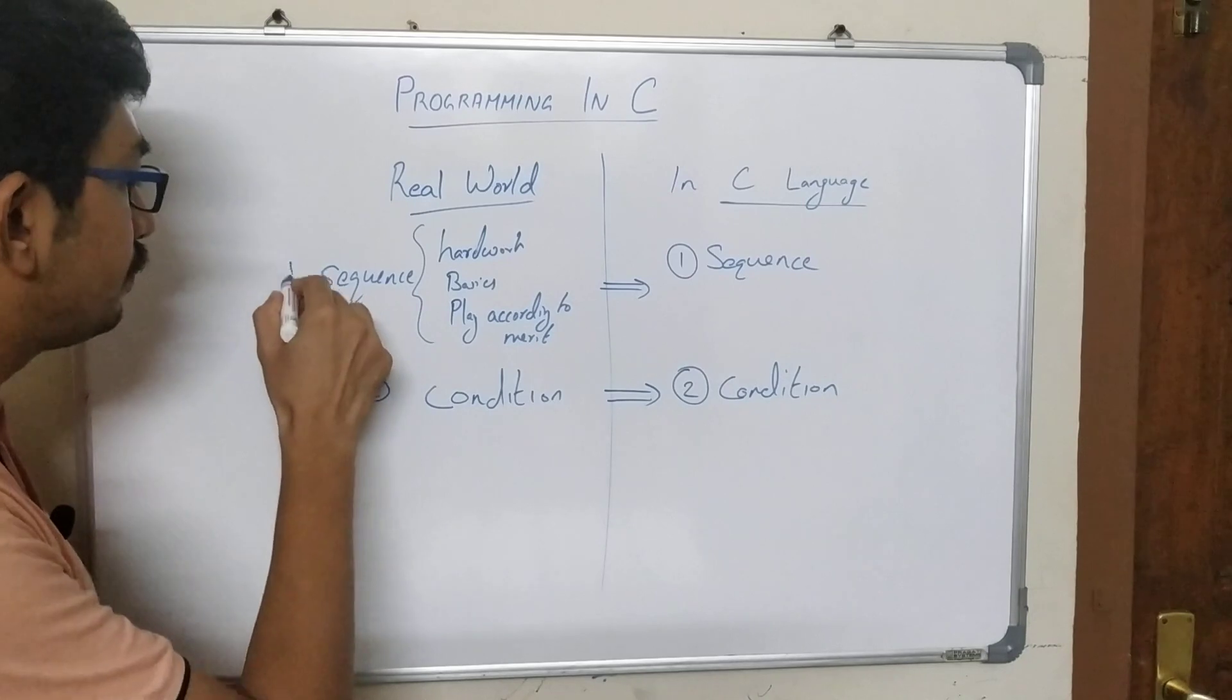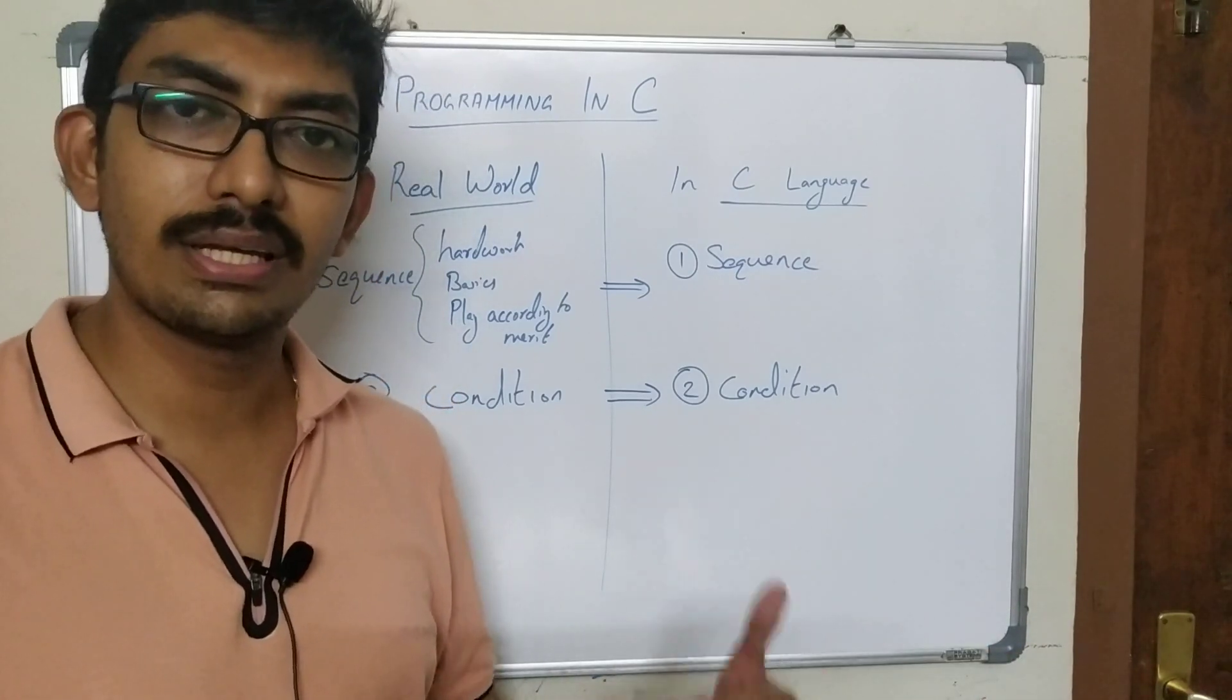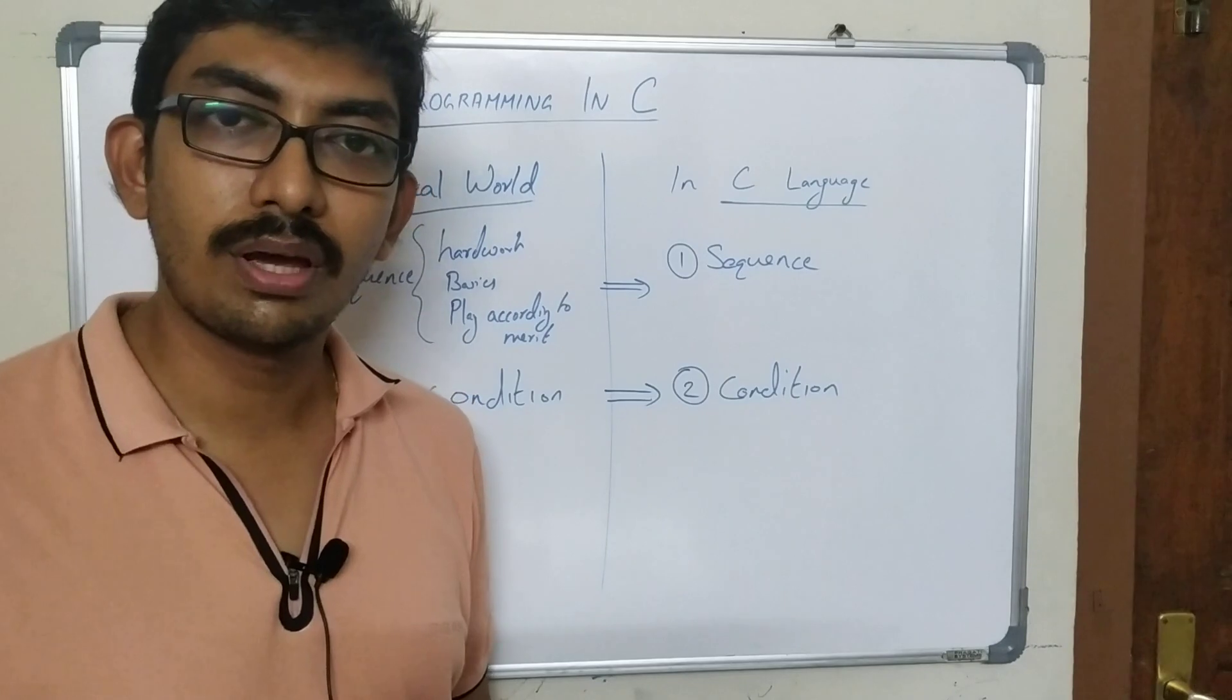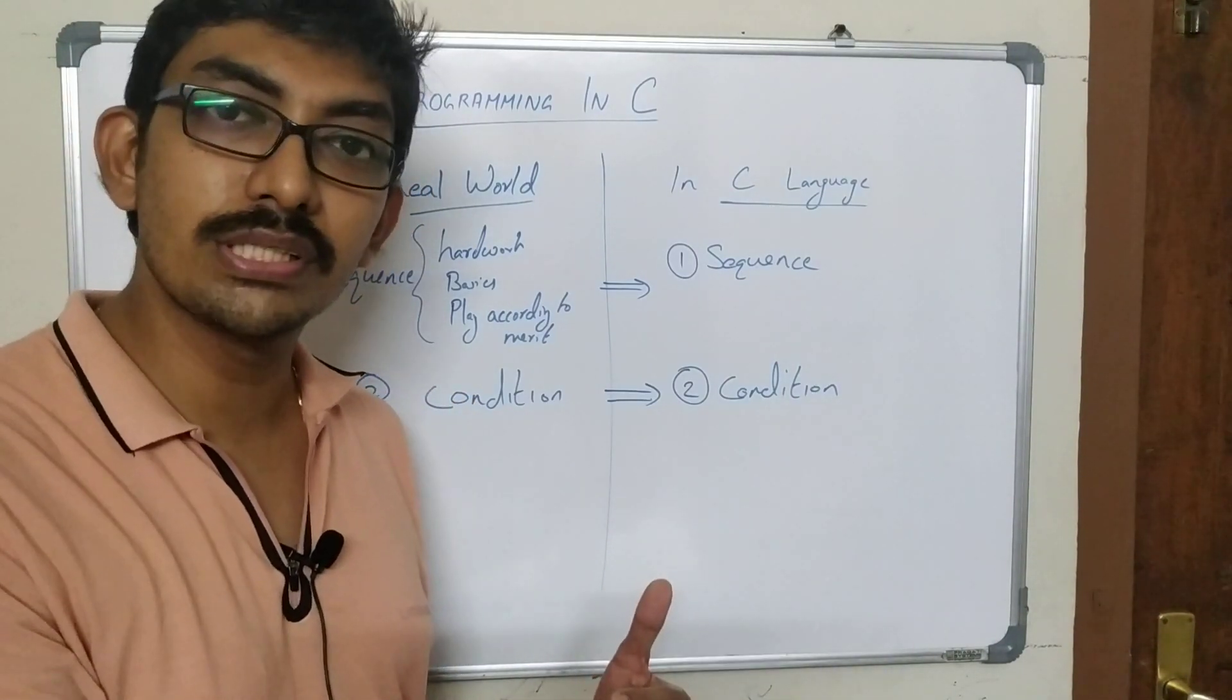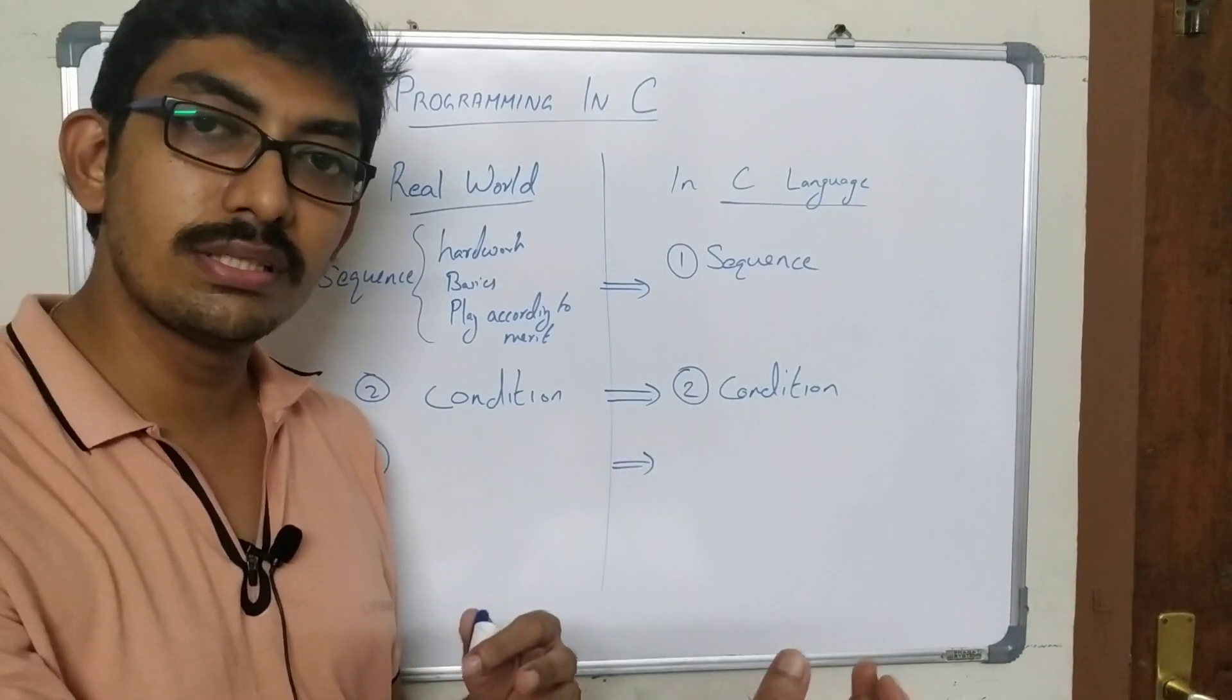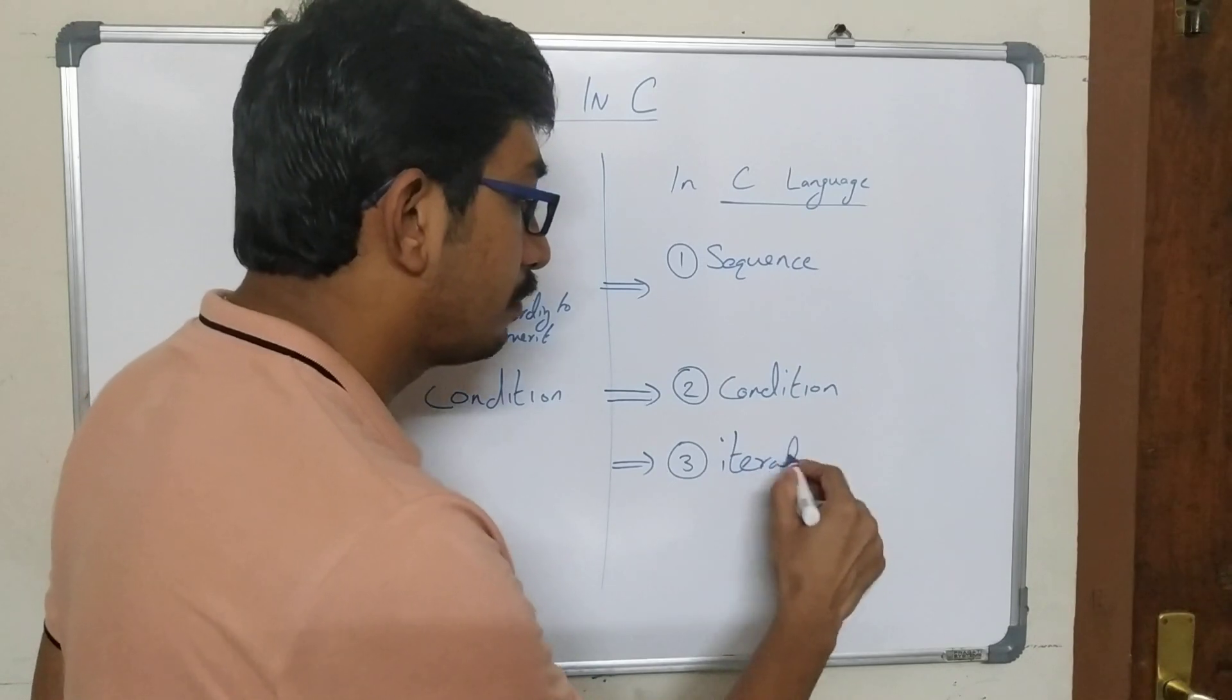Now we'll see another real-life scenario. Suppose you are doing a treasure hunt. From the first place you are getting another clue, and from that place you will get a third clue and you will move on until you reach the treasure. You are searching for clues and how long are you going to search for those clues? Until you reach the treasure. Which means until you are reaching some condition, you are going to repeat the process again and again, which is a repetition or it is also called an iteration.